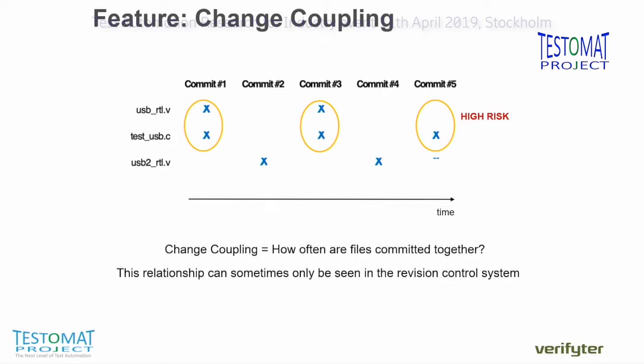There are also some features with illogical outcomes that I didn't include in the slides. For example, comment ratio in the code — you would expect well-documented code to contain fewer bugs. But what turned out to be true was that uncommented code could often be auto-generated code, like XML, so it didn't contain any faults at all. Whereas more commented code could, of course, be developer-produced.